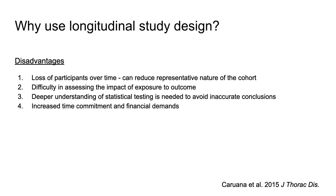Some of the disadvantages include: one, the loss of participants over time. Depending on the nature of your study and time frame, the loss of some participants might be inevitable. Volunteers in a human cohort can change their mind, move away, or drop out for any number of reasons. If you are sampling locations, they may become destroyed or inaccessible in the future. This loss can reduce the representative nature of your cohort if you do not lose subjects evenly across groups, and can reduce your statistical power.